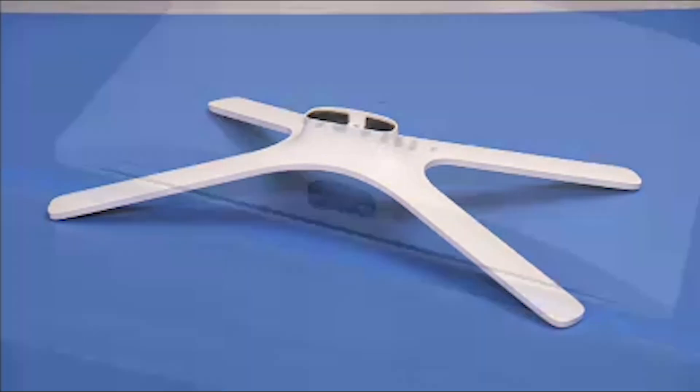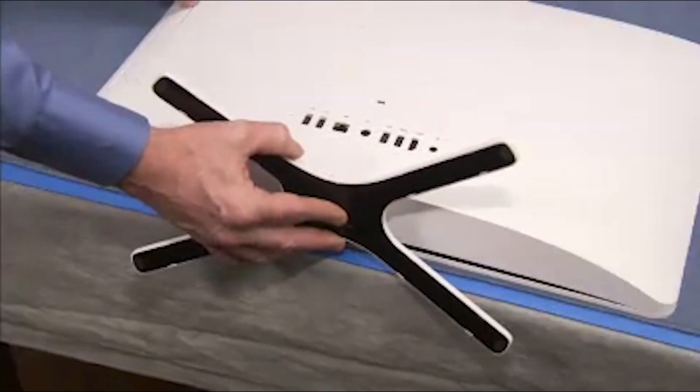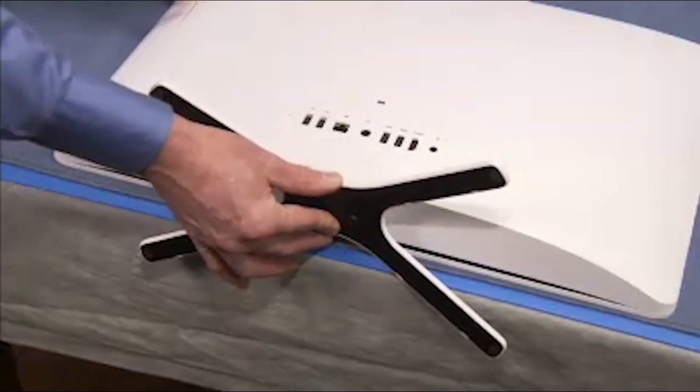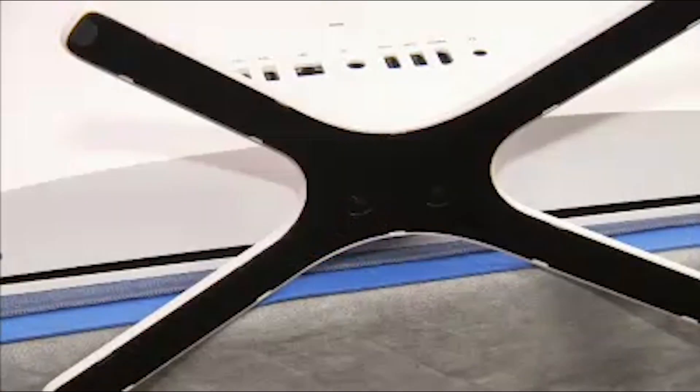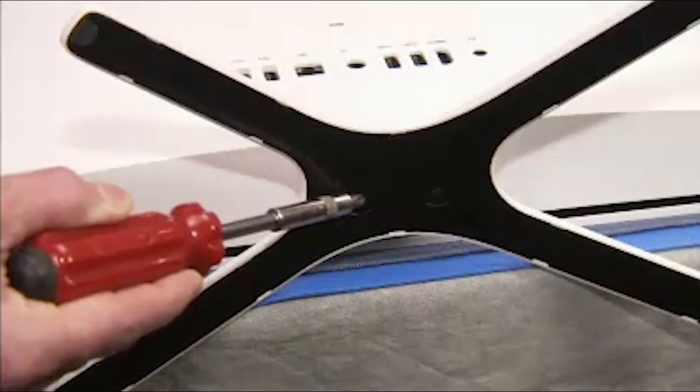To replace the stand, insert the holes on the stand over the locator pegs, aligning the curved front edges to each other. Tighten the captured Phillips number two screws to secure the stand to the PC.